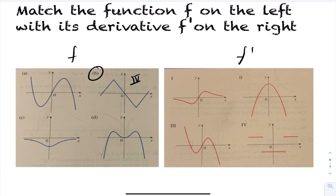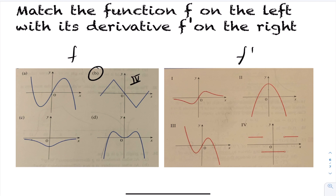Looking at graph d, we have a slope of 0 at three points. So the derivative must cross the x-axis three times. Looking at the right-hand side, graph 3 crosses the x-axis exactly three times, matching those three horizontal tangent points. The slopes are positive and trailing off — matching what we see in graph 3. So graph d matches with graph 3.